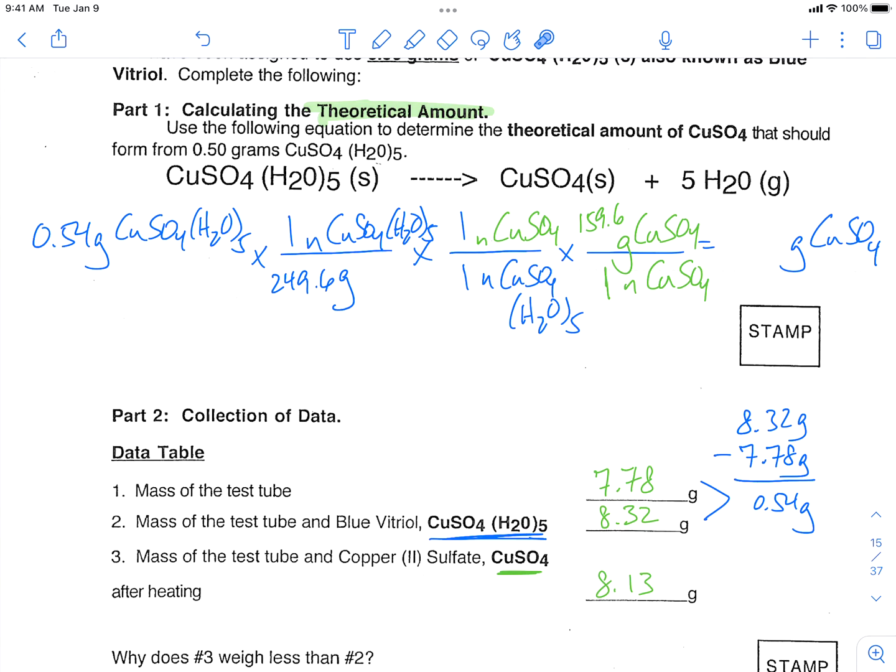So what this calculation is going to tell us is that if we start out with 0.54 grams of our copper sulfate pentahydrate, how many grams of just copper sulfate should we make?